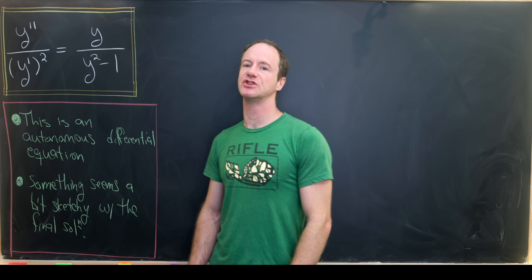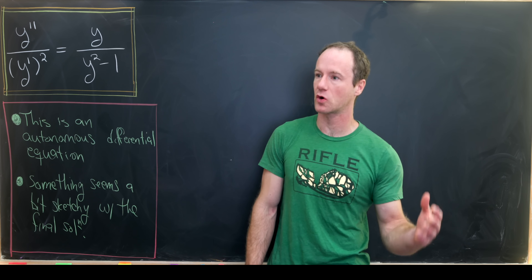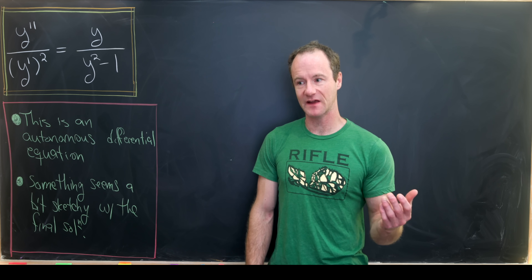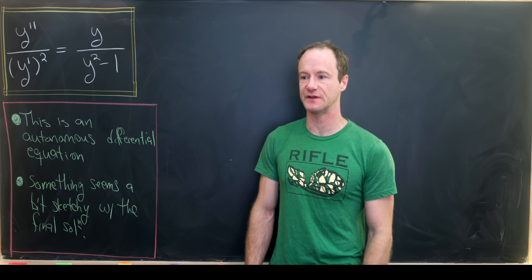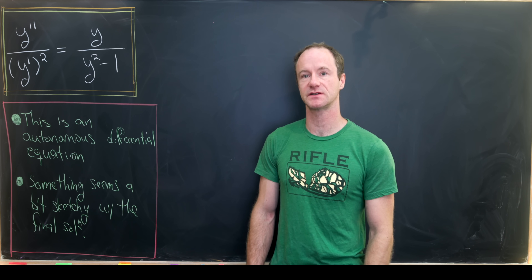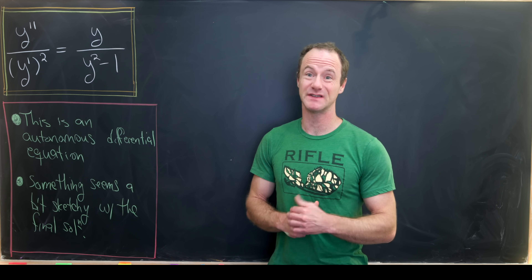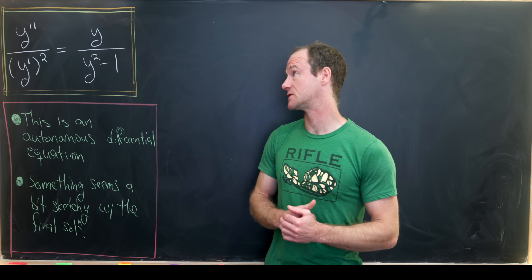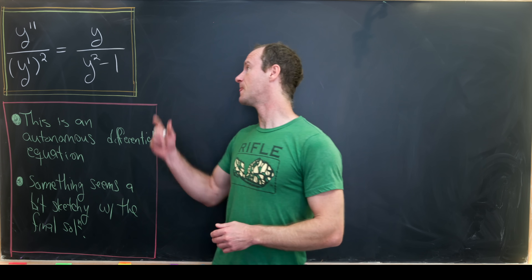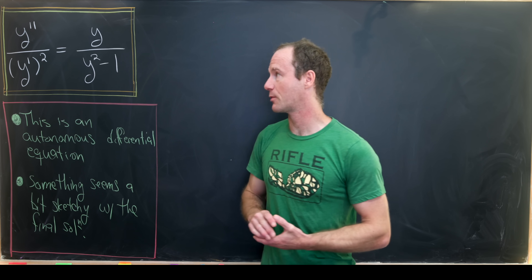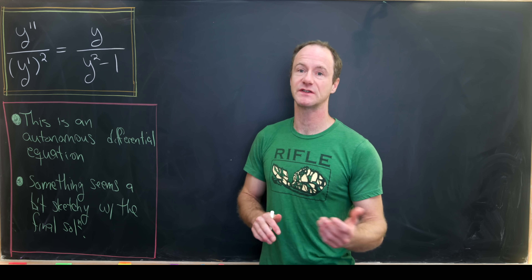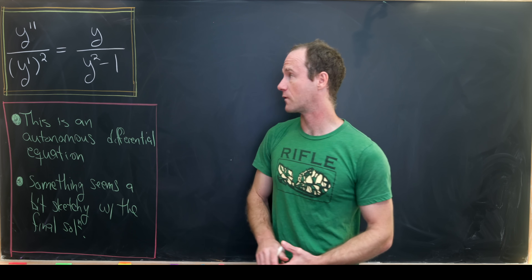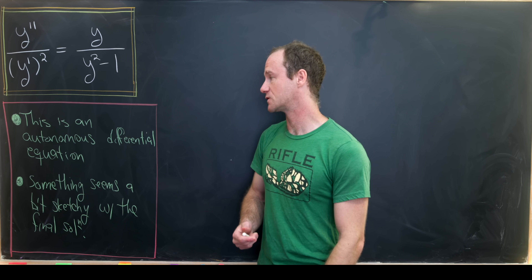The differential equation in question is a second order nonlinear differential equation. The fact that it's nonlinear means there's probably some trick to solve it — otherwise it would just plain be not solvable. So in this case we have y double prime over y prime squared equals y over y squared minus 1.